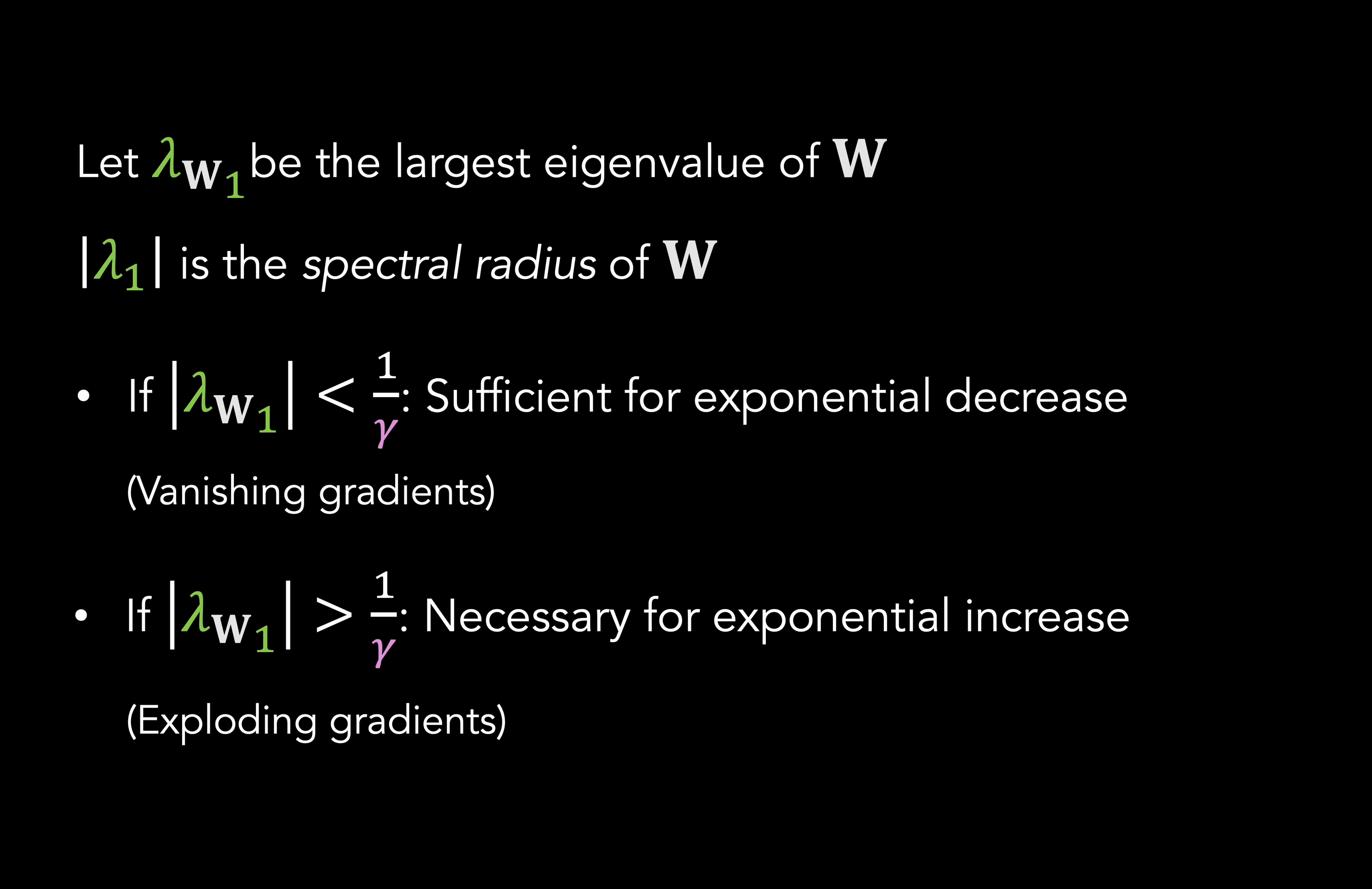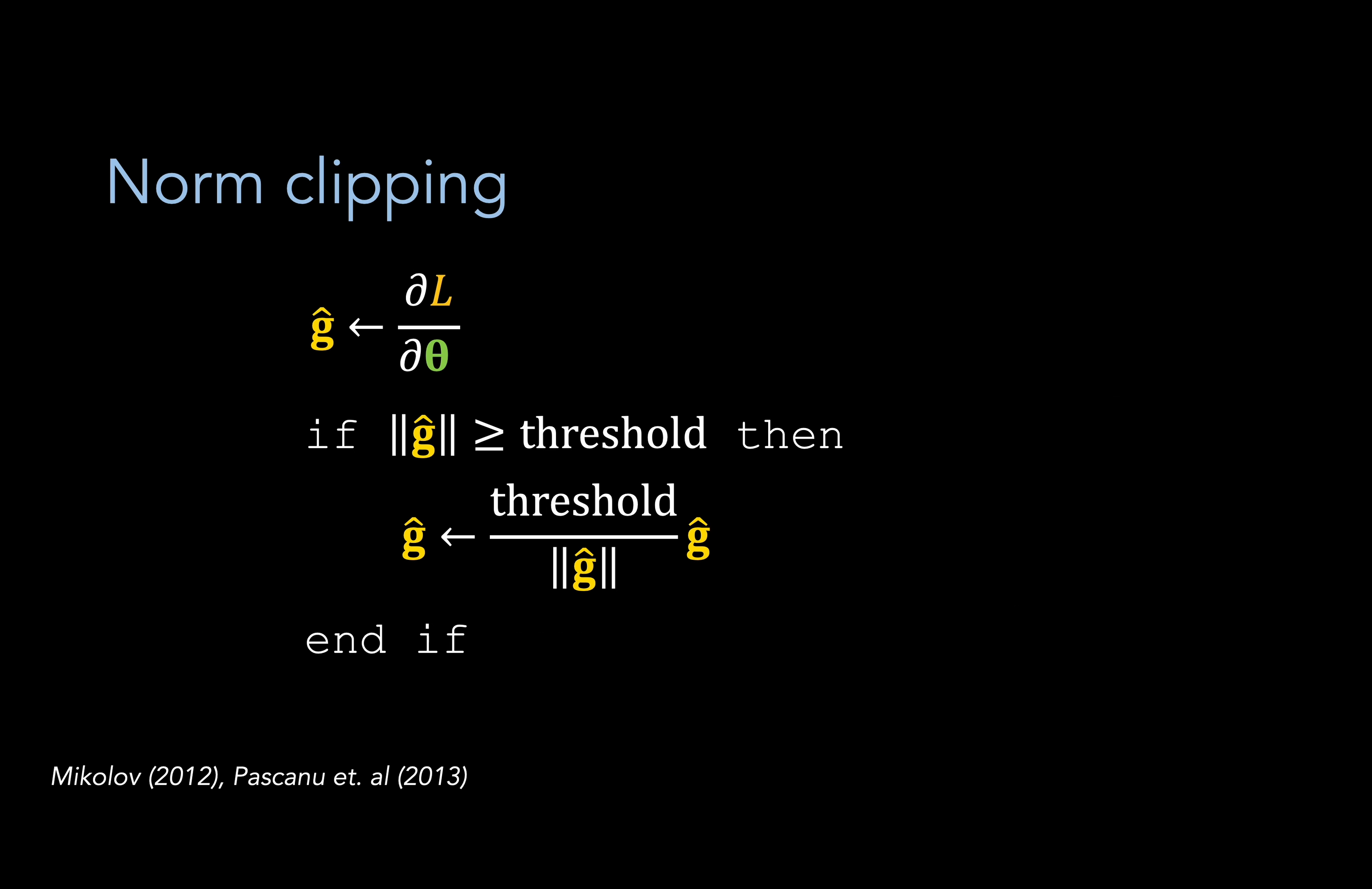Now finally, we can talk about some solutions to deal with these issues. One simple solution is norm clipping, which basically enables us to tackle the exploding gradients problem by restraining the norm of our gradient vector with respect to some parameters theta to be below some specified threshold.